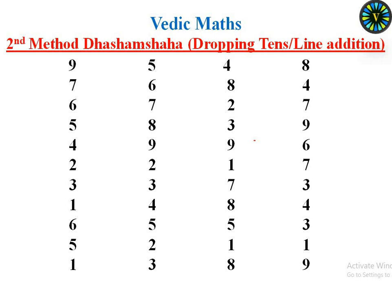Now we will look at the second method in addition. This is the second session, so you need to use the second method. In this method, the second two is nothing but 10. This is the 'drop 10' method in addition — this is the main addition, or the spark addition.